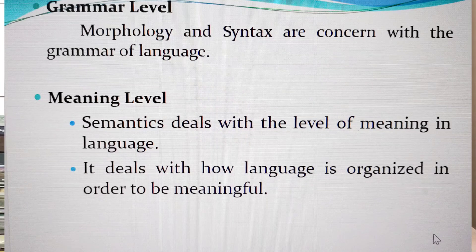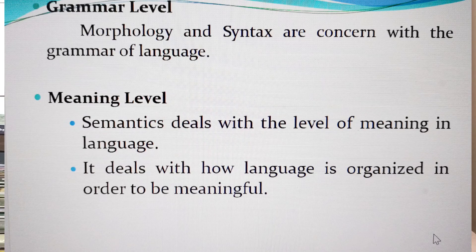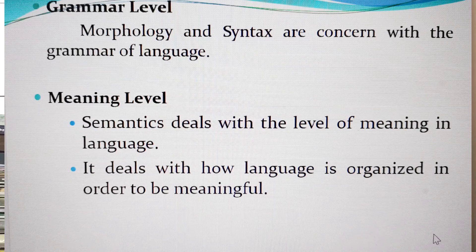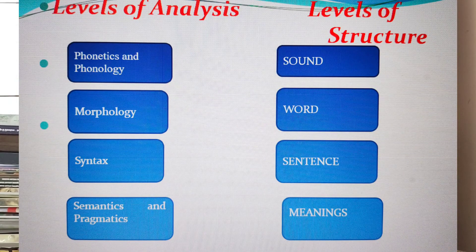We shall now move on to the next level, that is the meaning level. Meaning level consists of semantics, and we can also say that pragmatics belongs to the meaning level — but in pragmatics, meaning is studied in context. Semantics deals with the levels of meaning in language; it tries to give an account of the meaning of both words and sentences, and deals with how language is organized into meaningful units.